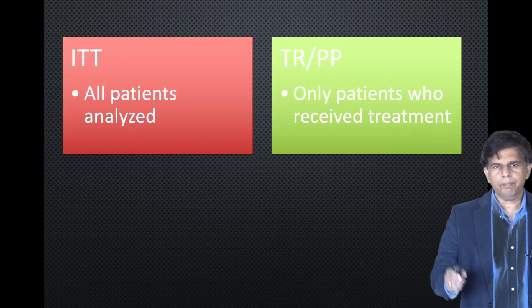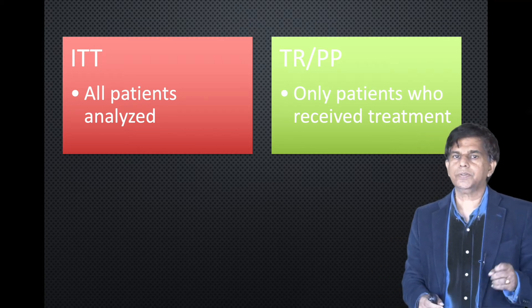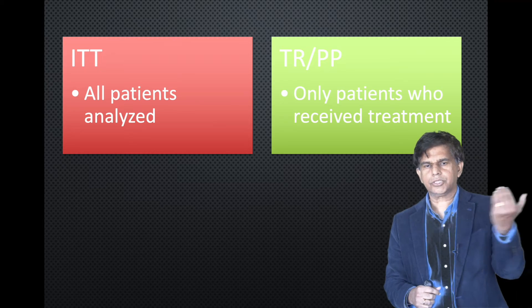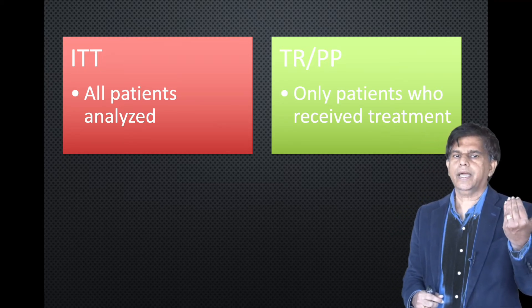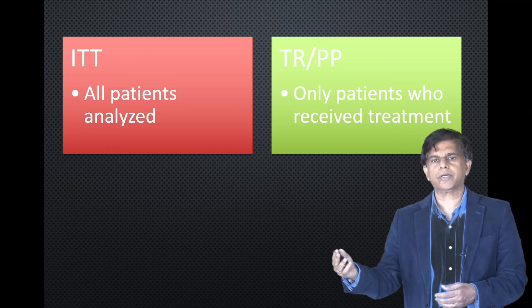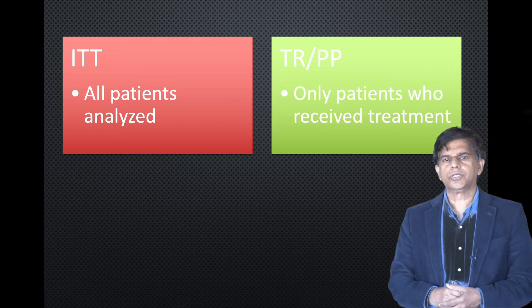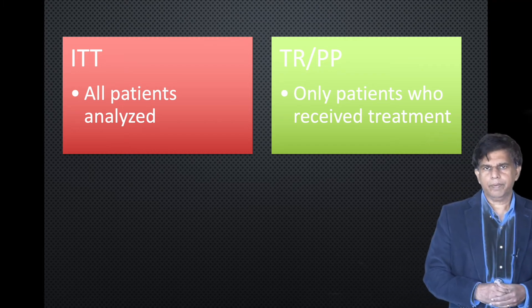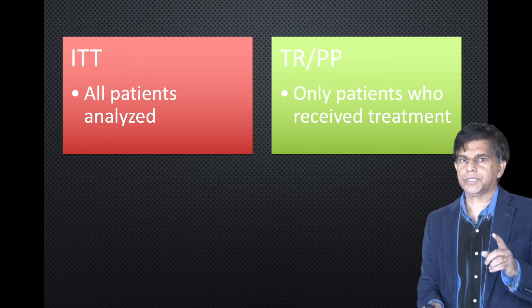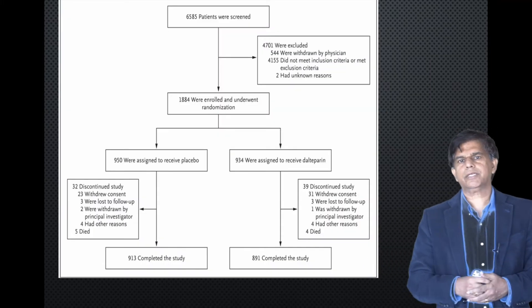The one thing you have to remember: intention to treat is usually used for randomized control studies. The difference is: intention to treat — all patients are analyzed regardless of treatment adherence. Per-protocol analysis — only the patients who received the treatment are analyzed. Intention to treat is used only in randomized control studies — remember that.